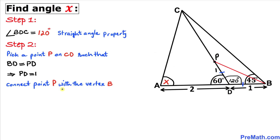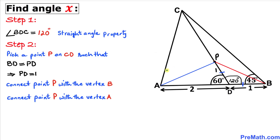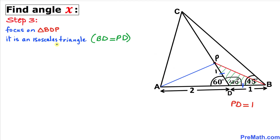We connect point P to vertex B and also connect point P to vertex A. Now let's focus on triangle BDP. This is an isosceles triangle since side length BD equals side length PD.